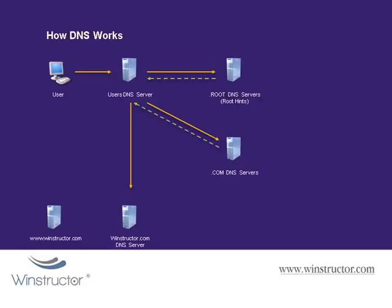Now that it has this information, the local DNS server asks the winstructor.com DNS server for the IP address of the computer name www in the winstructor.com domain. The DNS server responds, the user's local DNS server caches that name and IP address, and sends the information back to the user's computer. The user's computer now knows the IP address of www.winstructor.com, caches it locally, and then contacts the web server directly, which supplies the user with its default homepage.